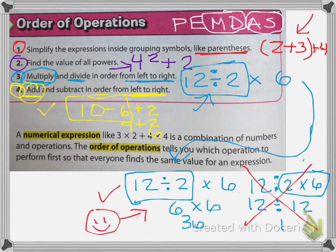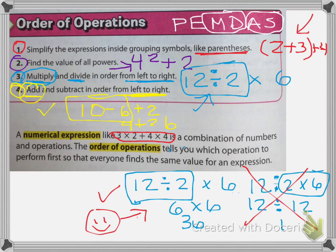A numerical expression like 3 times 2 plus 4 times 4 is a combination of numbers and operations. Notice there are only numbers and only operations. The order of operations tells you which operation to perform first so that everyone finds the same value for an expression. This is why it's important — we need everyone to perform math the same way and come up with the same answers.